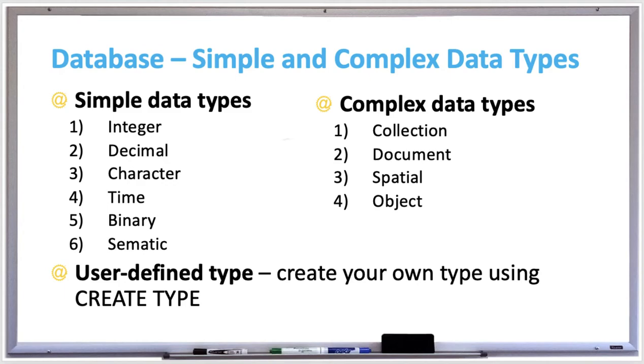Spatial, which is geometric information like lines, polygons, or map coordinates. And object, which is object-oriented programming constructs.